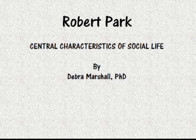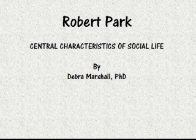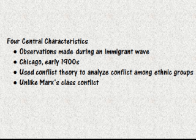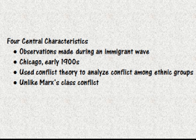We should talk about Robert Park. He came up with ideas called the central characteristics of social life — four characteristics of how groups would assimilate and come together as one. Park was a member of the Chicago School in the early 1900s in the U.S., and he made his observations during an immigrant wave into Chicago. Many different immigrant groups were flooding into Chicago during his field work, and he used conflict theory to analyze the conflict among these many ethnic groups setting up different ethnic enclaves around and in the city of Chicago.